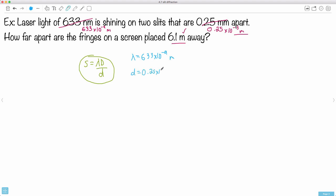We have capital D as well, that's this one right here, 6.1 meters—that's because that's the distance between the slits and the screen. The question is asking: how far apart are the fringes? We want the fringe separation which is s.